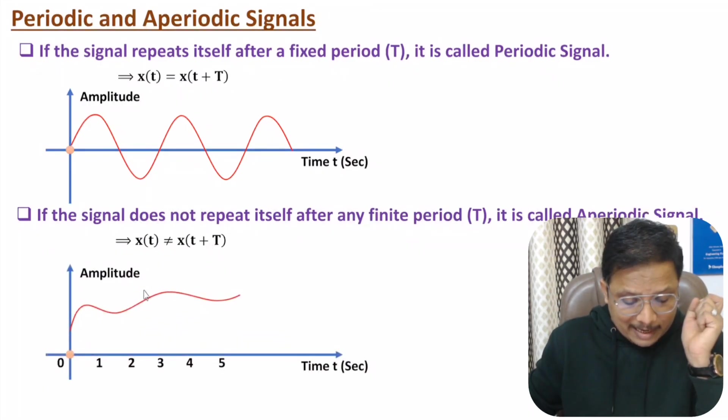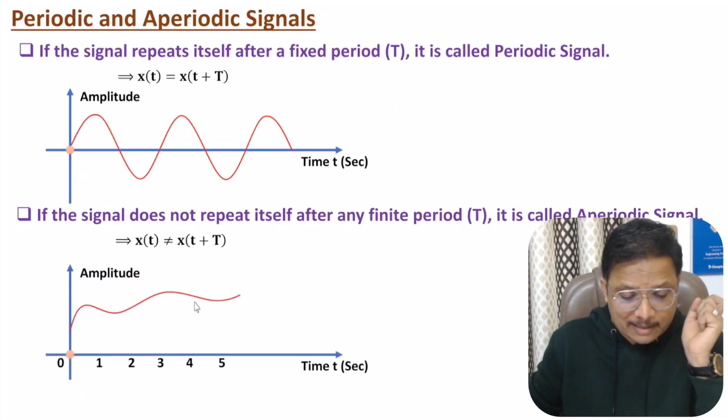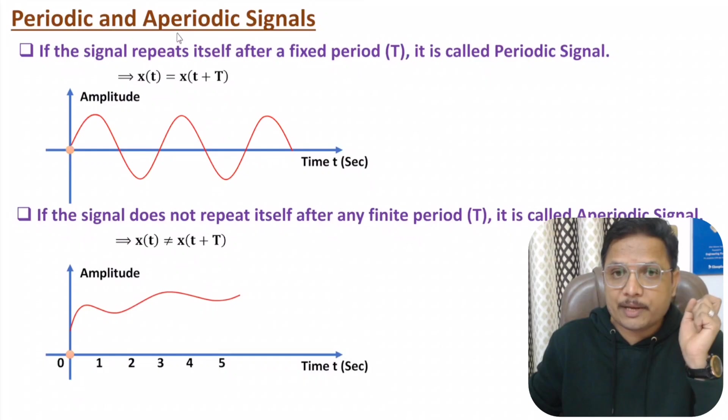Aperiodic signals are not repeated after a finite duration, so X(t) ≠ X(t + T). A random signal is a classic example of an aperiodic signal.